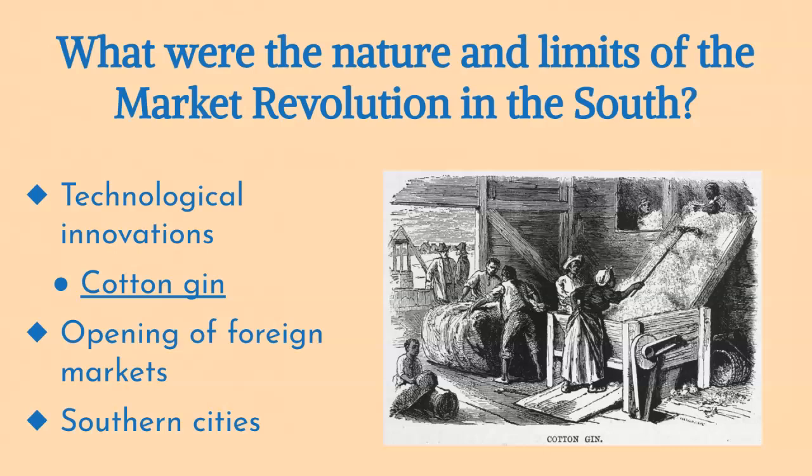Technological innovations in the South, such as the cotton gin, played a crucial role in increasing cotton production. The cotton gin, invented by Eli Whitney, dramatically sped up the process of separating cotton fibers from seeds, allowing planters to meet the growing global demand for cotton. In addition, machines were developed to press cotton into bales, making it easier to ship the raw product. These technological advancements reinforced the South's commitment to a cotton-based economy and the expansion of slavery rather than fostering economic diversification.